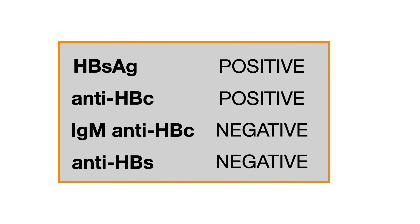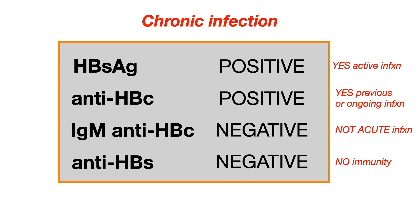Let's wrap up with this final example. We've got a positive surface antigen, a positive core antibody, a negative core antibody IgM subtype, and a negative surface antibody. This is chronic infection. The surface antigen is positive, so you know there's active infection. The core antibody is also positive — that tells you there's either a previous or an ongoing infection. But because that core IgM is negative, it's not an acute infection, and therefore it's a chronic infection. The surface antibody is negative, so there's no immunity.